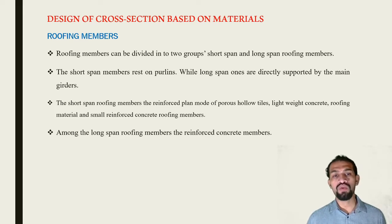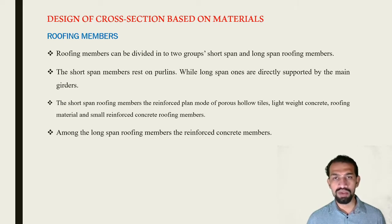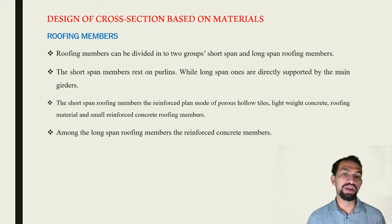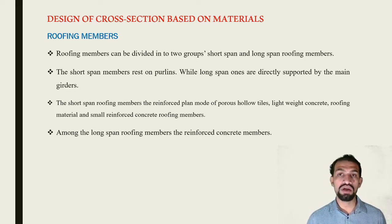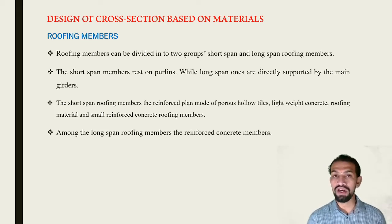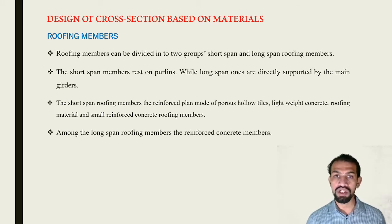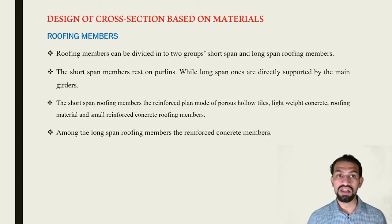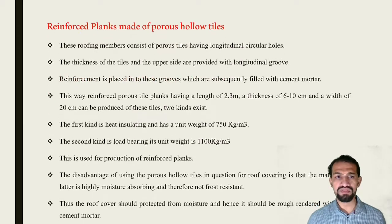Short span roofing members can be reinforced planks made of porous hollow tiles, reinforced lightweight concrete, hollow tiles, or small reinforced concrete roofing members. For long span roofing members, the members are in reinforced concrete and need to be perfectly and accurately designed as per concrete mix design, concrete calculations, reinforcement calculations, and spacing of reinforcements.